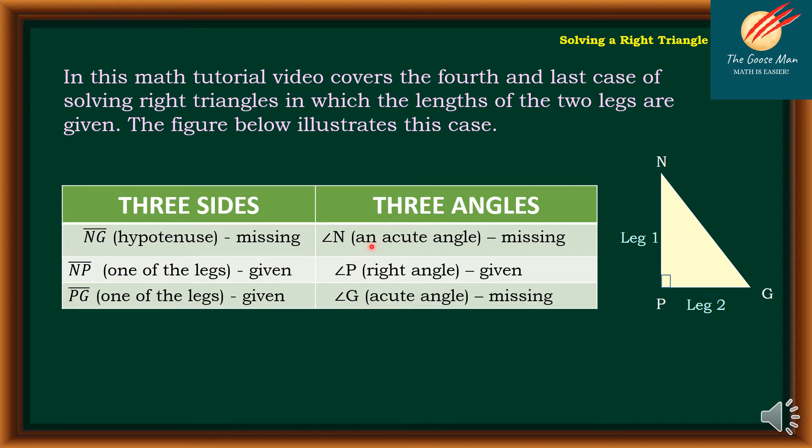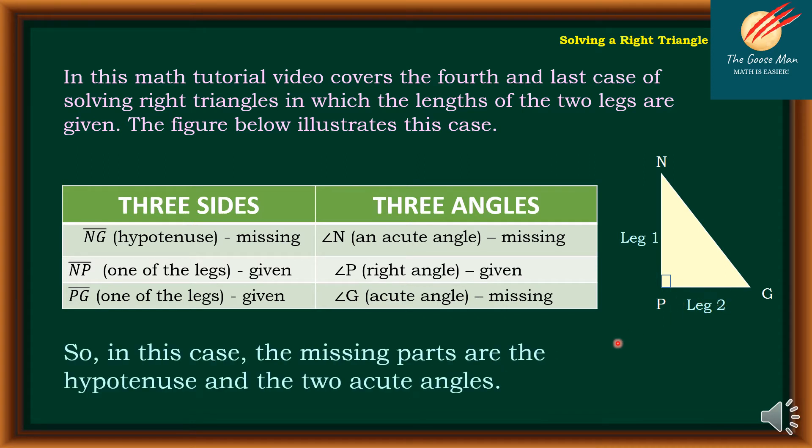angle N is unknown, angle P is the right angle, is given, and angle G is missing. So in this case, the missing parts are the hypotenuse and the two acute angles.